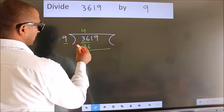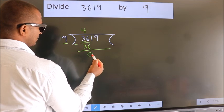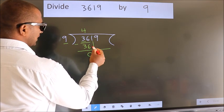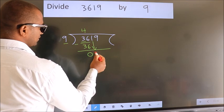Now, we should subtract. We get 0. After this, bring down the beside number. So, 1 down.